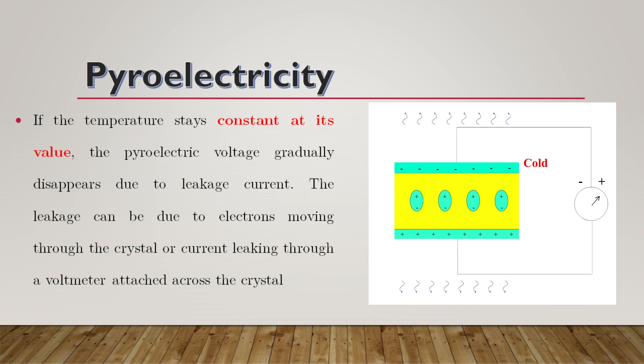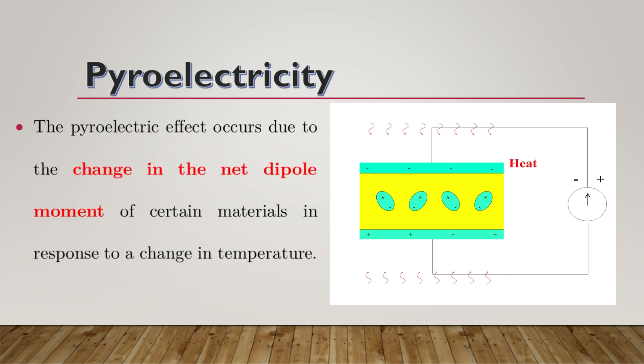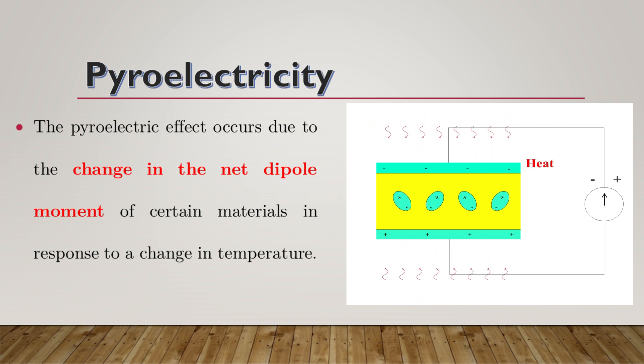The leakage can be due to electrons moving through the crystal or current leaking through a voltmeter attached across the crystal. The pyroelectric effect occurs due to the change in the net dipole moment of certain materials in response to a change in temperature.